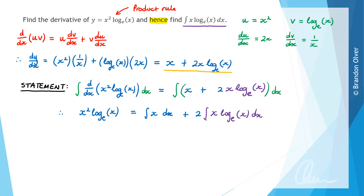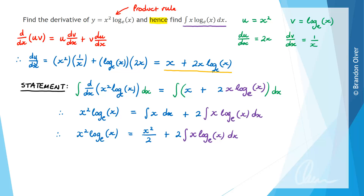Our job now is to get this integral by itself. So we write that x squared times log e of x equals the integral of x with respect to x, which is x squared over 2, plus 2 lots of the integral of x log e of x dx. Because we've performed integration, we need to add a constant of integration, plus c.